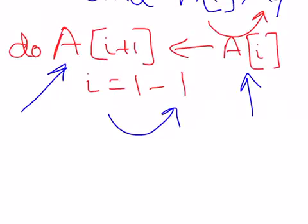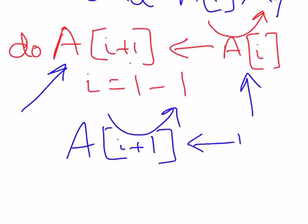And what we are doing, i, we have to decrease by 1 because remember, we are moving towards the left of the array. And also in the A[i+1] position, we are copying the element key, copying the variable key.